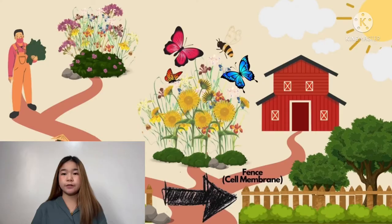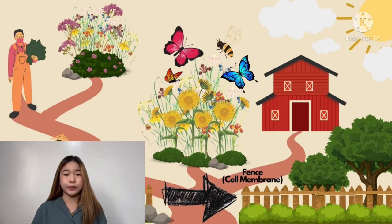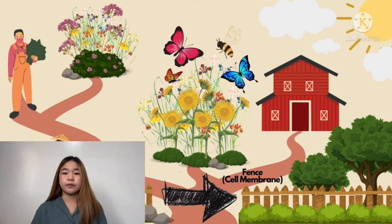Let us start with the fence. The fence is like the cell membrane. It serves as protection of the farm from any intruders or creatures that may destroy or harm the flowers. Just like the fence, the cell membrane in a cell prevents harmful and toxic substances from entering.